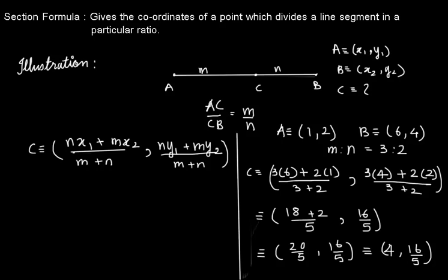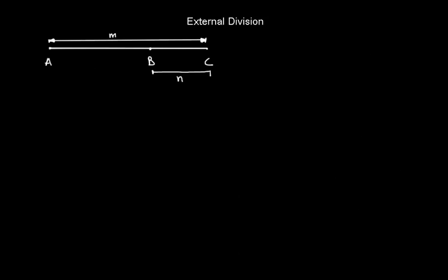Now there is a formula to calculate the external division. We need to calculate point C when C divides AB externally. We have the following case: in external division, when C divides AB externally, the ratio AC/CB equals m/n, but here the length of AC is greater than the length of BC, therefore m would be greater than n.